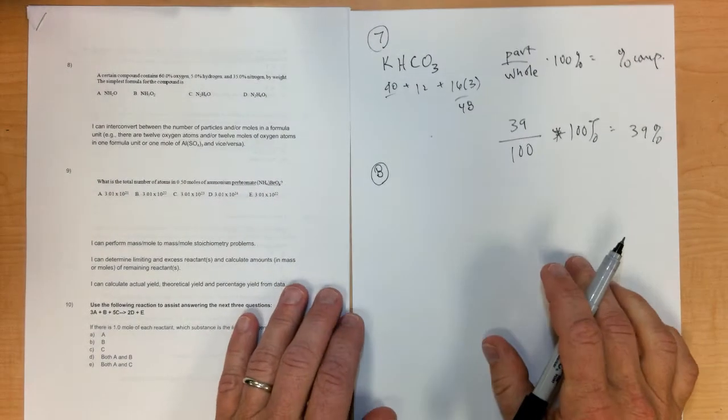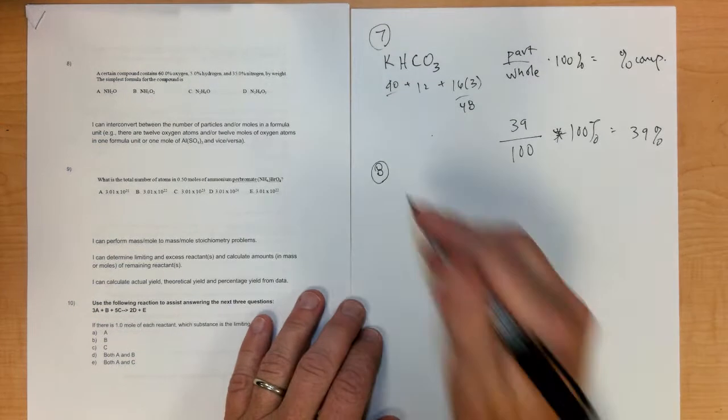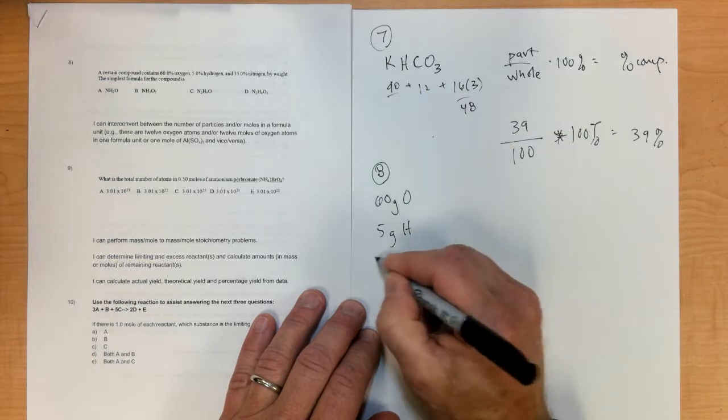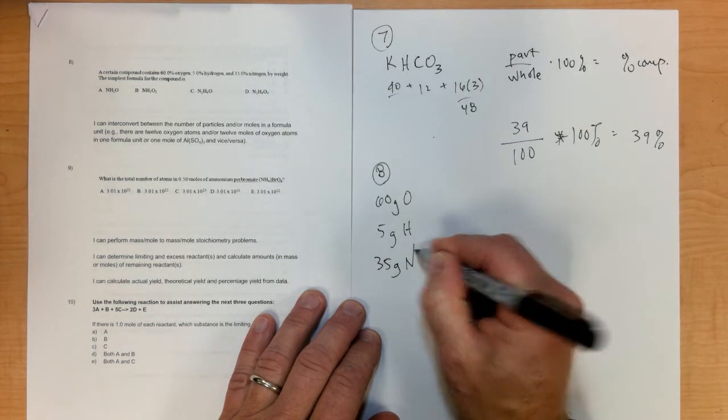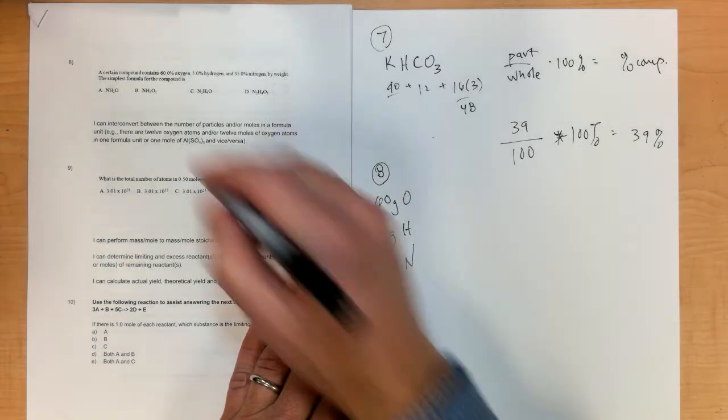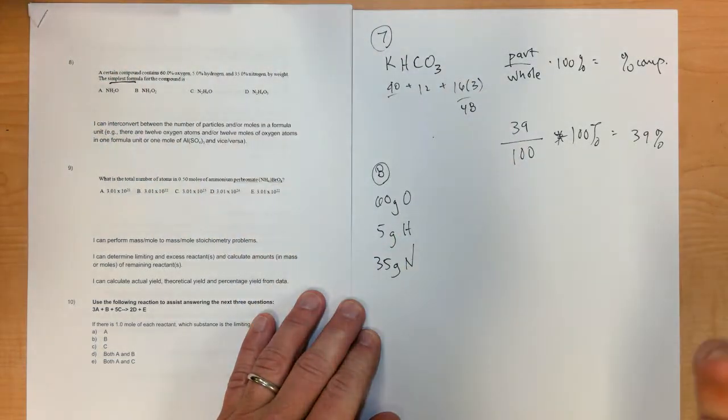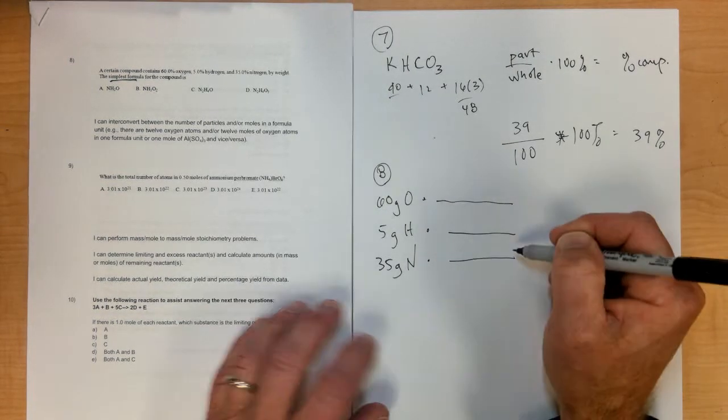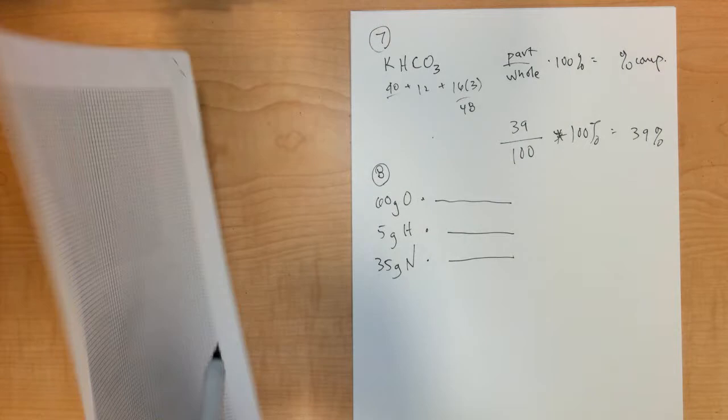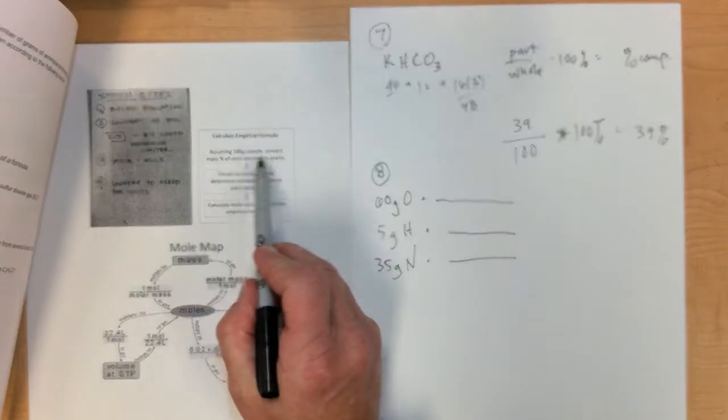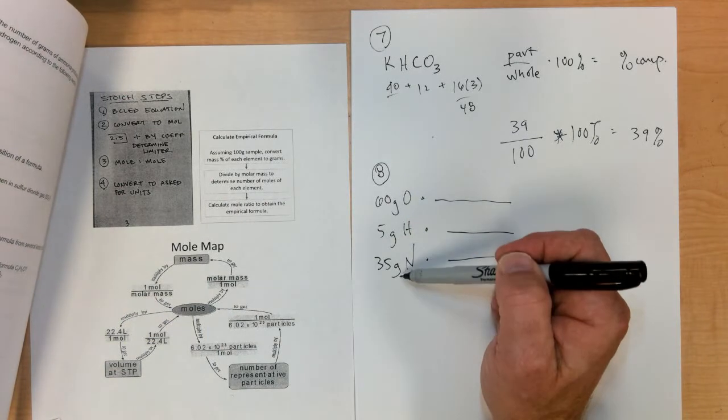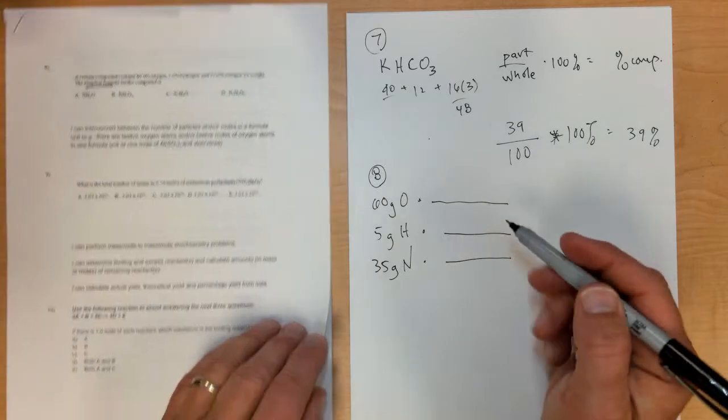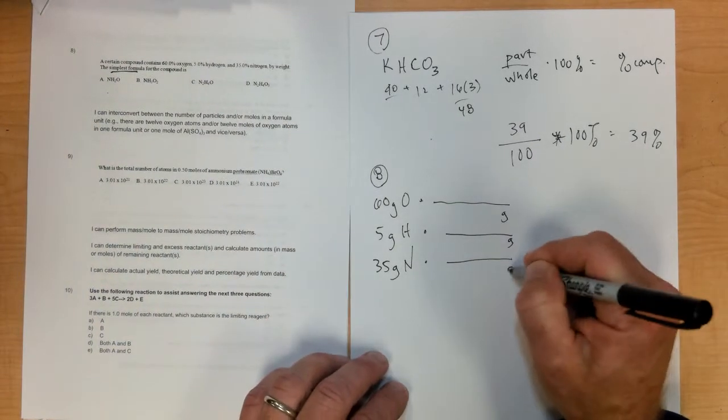Number eight: a certain compound contains 60% oxygen, 5% hydrogen, and 35% nitrogen. We need to find the simplest formula, also known as the empirical formula. Step one is to assume a 100-gram sample. The steps are given: assume 100-gram sample, convert to grams, then divide by the molar mass to determine the number of moles in each element.